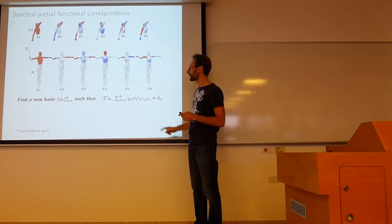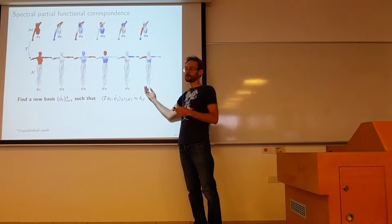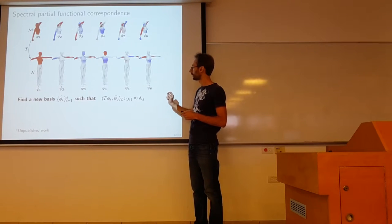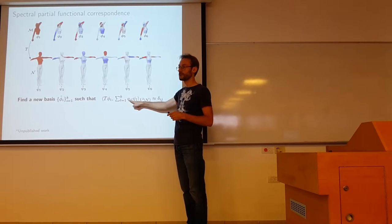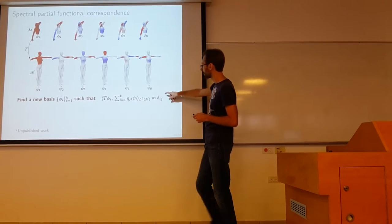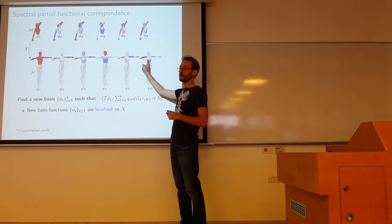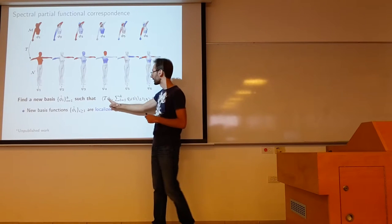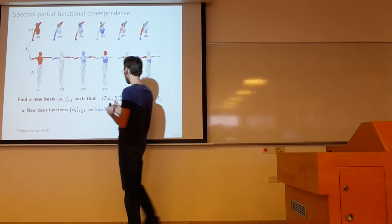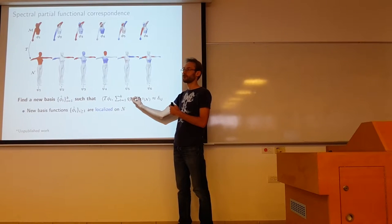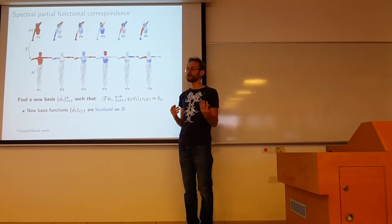So you see, because of this constraint basically what happens? We represent as in our joint diagonalization paper, these new basis functions as linear combinations of the Laplacian eigenfunctions. So basically we represent them as linear combination coefficients Q. And because of this orthogonality constraint what happens is that the new basis functions are localized. You can immediately see why, right? Because the support of T φ_i on M will be limited to this overlapping part. It will be zero outside. Basically if I want orthonormal basis, basically if I want orthonormality with respect to the new basis functions, basically the new basis functions must vanish outside of that support as well.